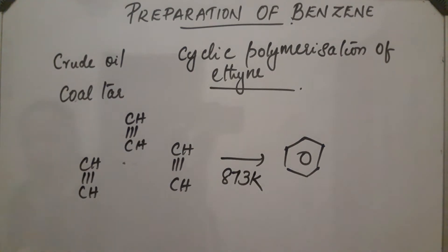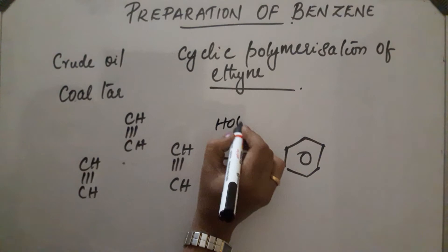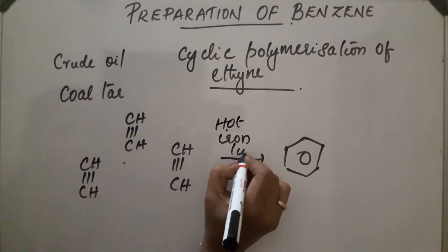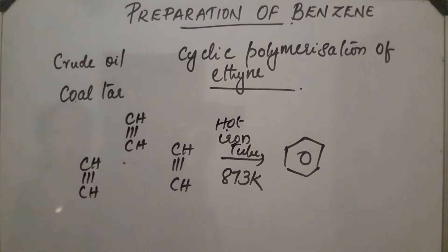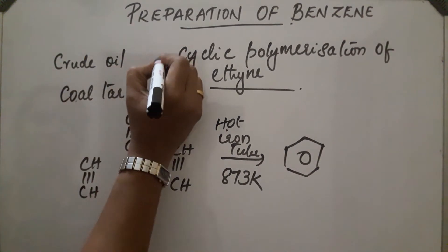The reaction takes place at a high temperature of about 873 Kelvin. Ethyne is passed through a hot iron tube, and at 873 Kelvin cyclic polymerization takes place, converting the three molecules of ethyne into benzene. This is the first method of preparation.